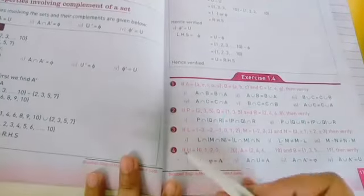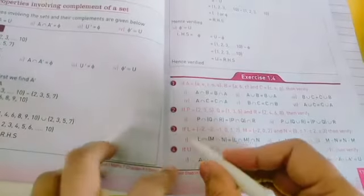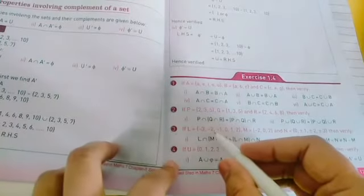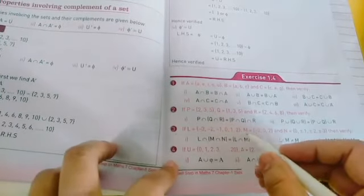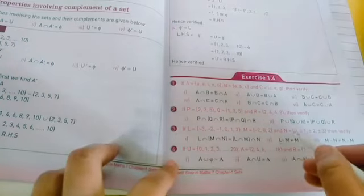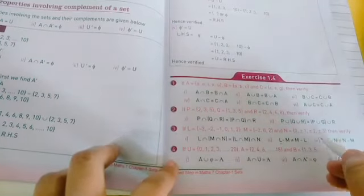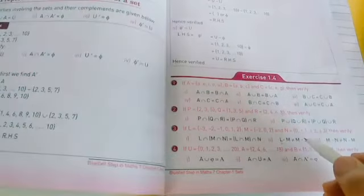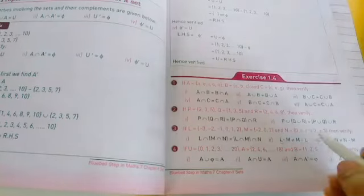If L is the set of minus 3, minus 2, minus 1, 0, 1, 2, 3. M is a set of minus 2, 0, and 2. And N is a set of 0, plus minus 1, plus minus 2, plus minus 3. Plus minus are also used to depict the integers.